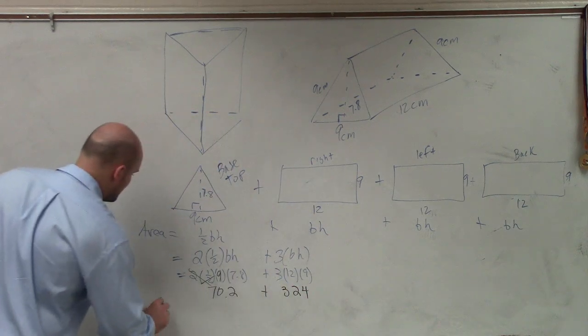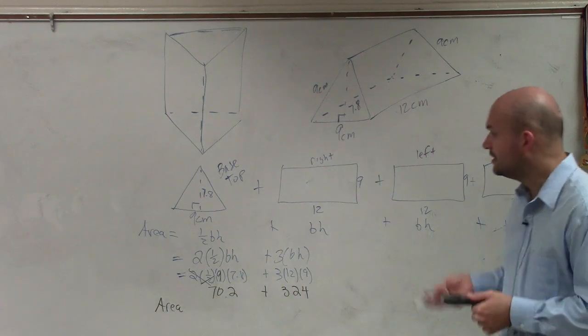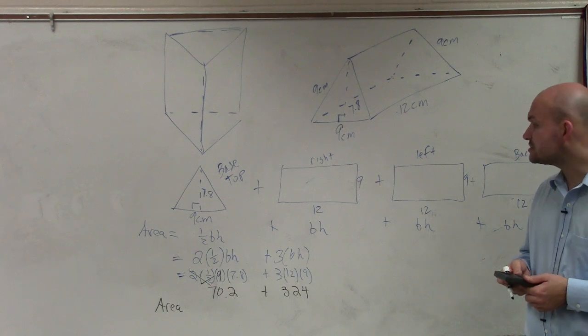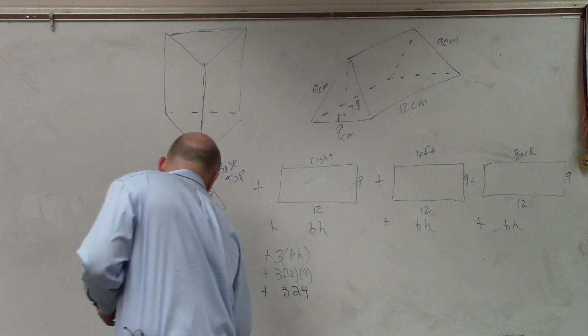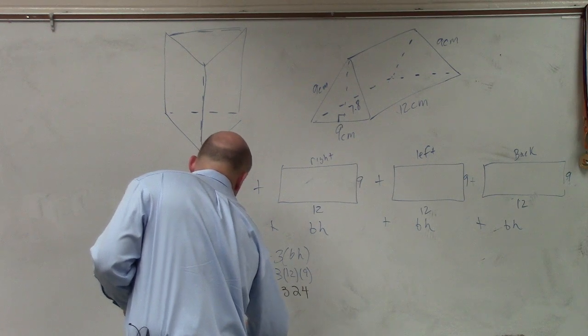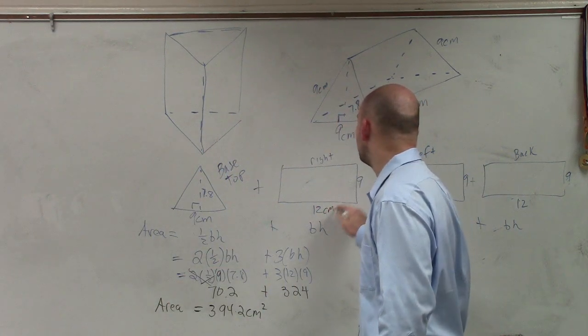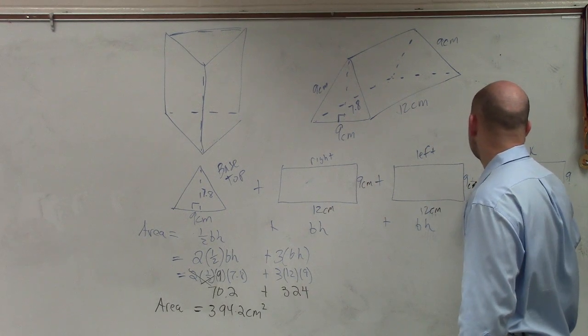Therefore, the total area of all of the sides, which we call the lateral surface area, is going to be 70.2 plus 324, which will be 394.2 centimeters squared. Remember, our dimensions are in centimeters. And since we're finding the area, it's going to be in the second dimension, which we'll have as squares.